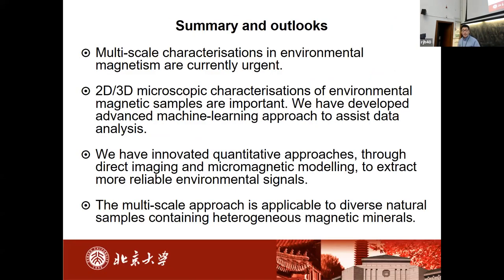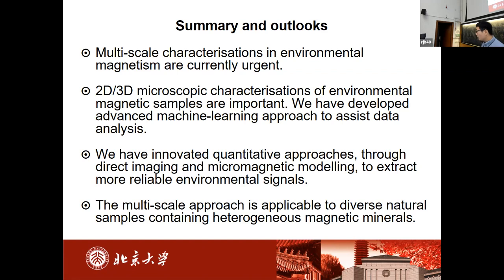To summarize: multi-scale environmental magnetism is very, very important. We can't do it for all samples, but I think it's very important to do it for some samples to verify. We have methods to assist in analyzing more efficiently. We can build numerical models using microscopic characterizations to predict the bulk properties often measured in the lab. This method could be very useful for many dirty samples. Thanks so much.